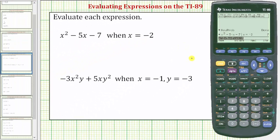Notice the next expression is a little bit different. The expression contains two variables, and we're given a value for x and a value for y. Because the expression has two variables, we will have to enter multiplication in between the x² and y here, as well as the x and y² here.